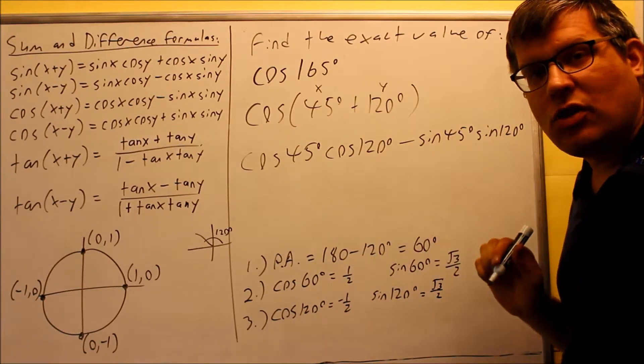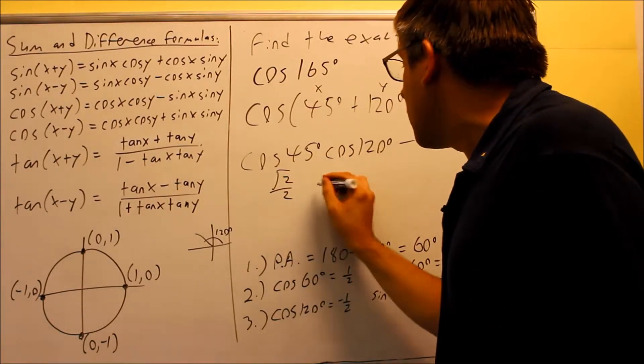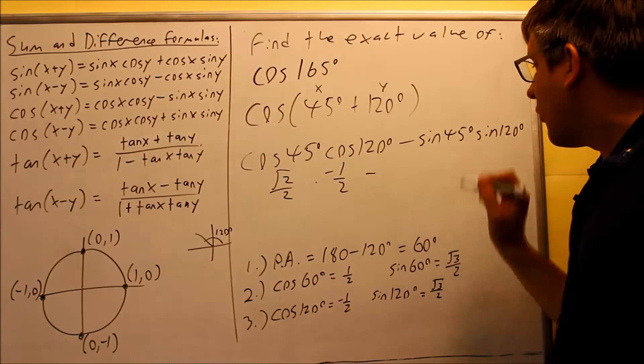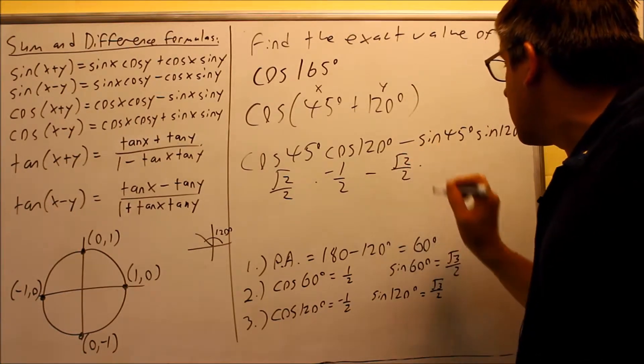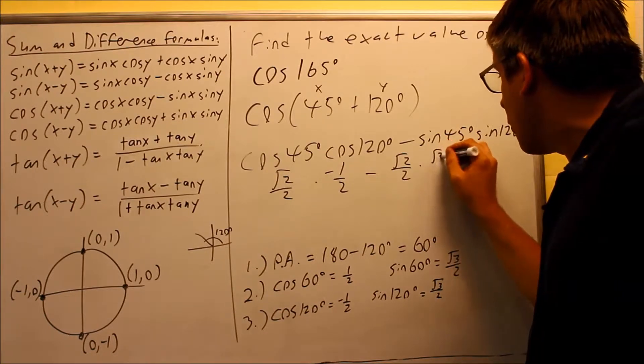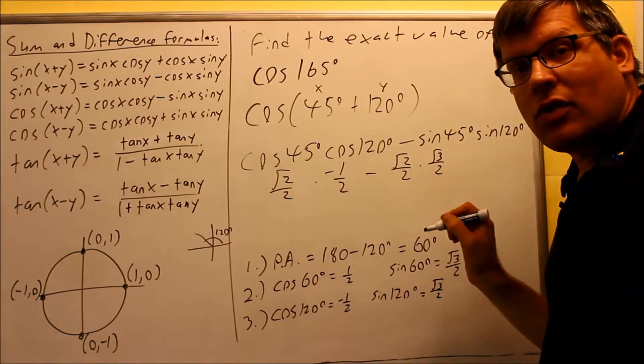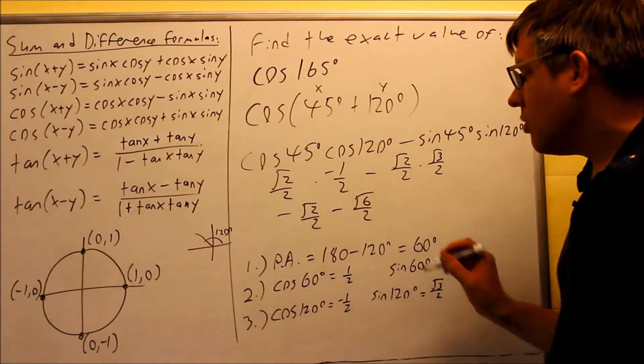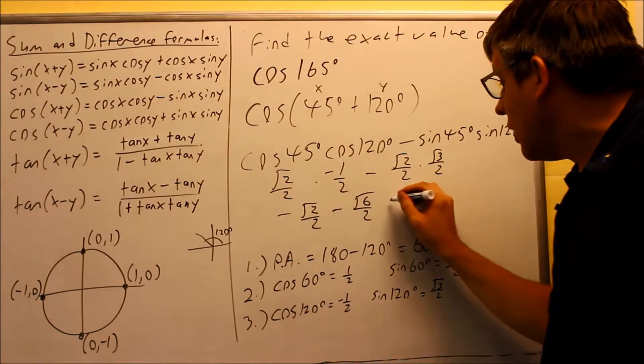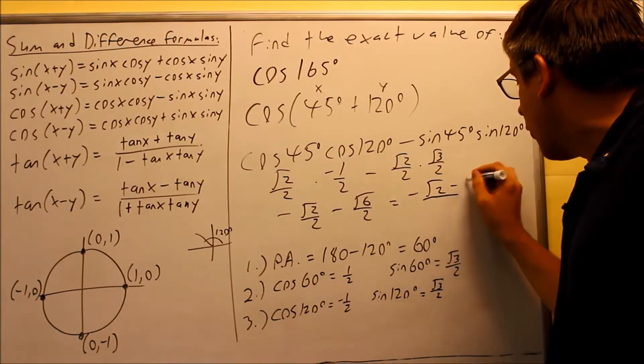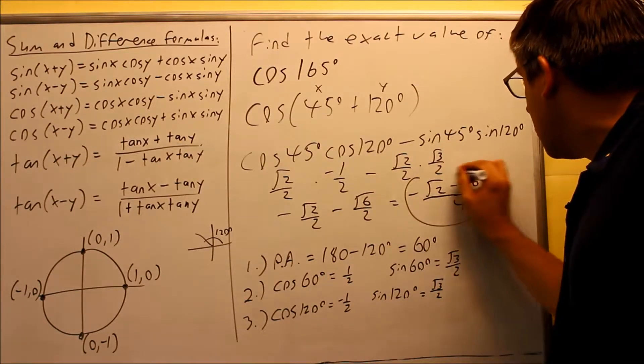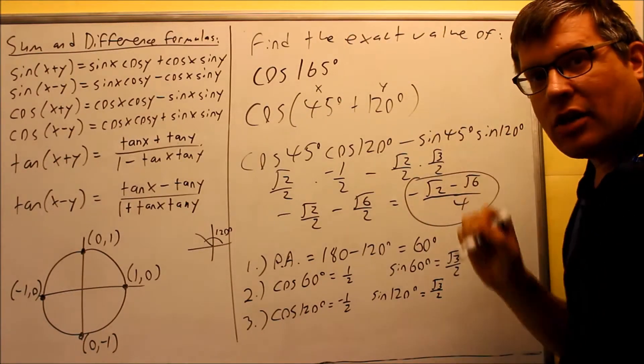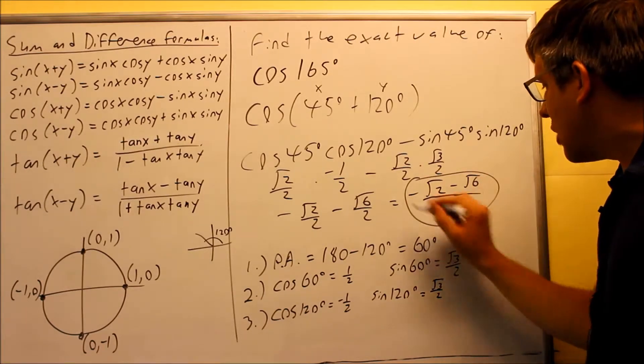So now I have all the exact values I need to finish this problem. Cosine 45 is square root of 2 over 2. Cosine 120, we found that right here, that's negative 1 half. We have minus, sine 45 is from the table, square root of 2 over 2, and sine 120 is this exact value, root 3 over 2 there. Now we're going to combine everything all together. We get negative root 2 over 2, and then we have minus root 6 over 2. You could always write this as a single fraction if you wanted to. So therefore, cosine 165 is equal to all of this. If you were to put this into a calculator and get a decimal approximation, you would get exactly the same decimal as this one.